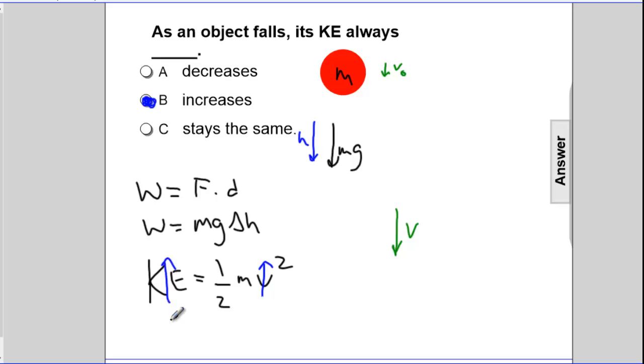If it were going in the opposite direction, free-falling, the only force acting on it were gravity, it would be losing kinetic energy.